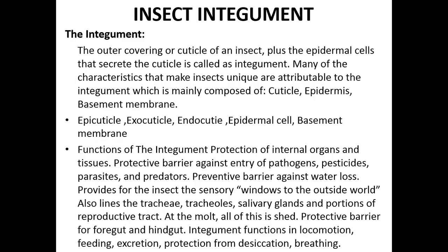At molting, all of this is shed. It serves as a protective barrier for the foregut and hindgut. Integument functions in locomotion, feeding, excretion, protection from desiccation, and breathing.